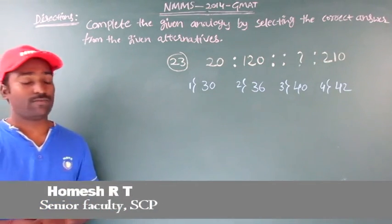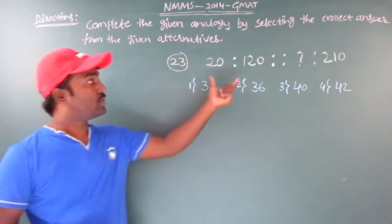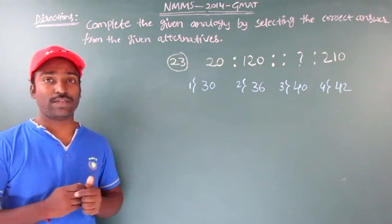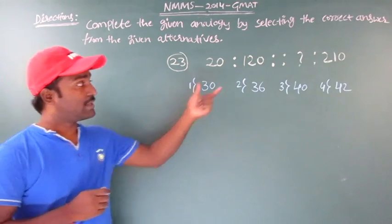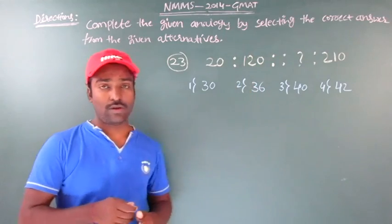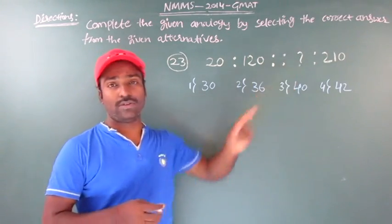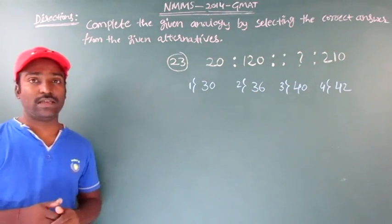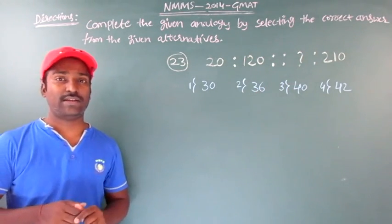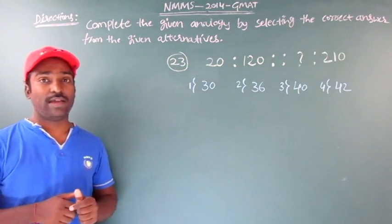Analogy means they will use two numbers here and the two numbers are related with some relation. So we have to find that relation, and the same relation — the same analogy — is used to get the missing number. These types of problems are easy, but you have to get the right idea at the right time to get the right answer for such type of examples.